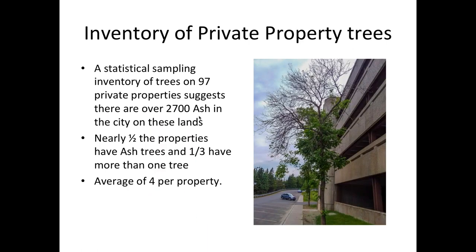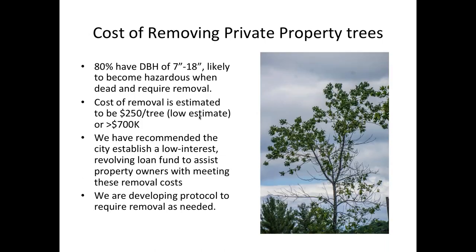A sampling of 97 private properties found 97 trees, and extrapolating that data we think there are close to 3,000 ash trees on private property in Montpelier. Having a plan for working with citizens to ensure their safety and that of their neighbors is a major task, including updating the tree ordinance so we have authority to help protect neighbors when trees pose a hazard.